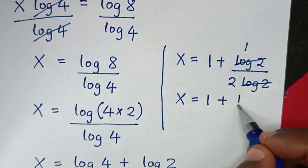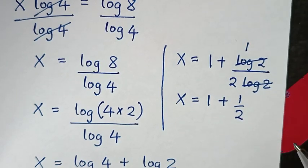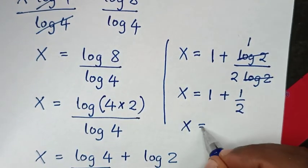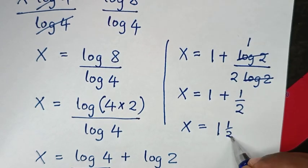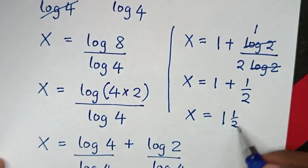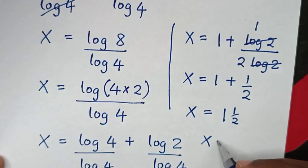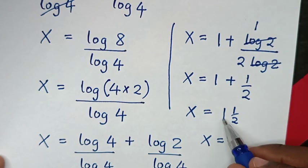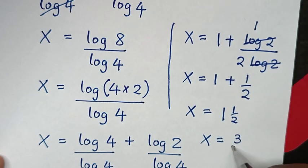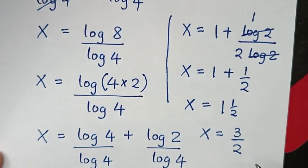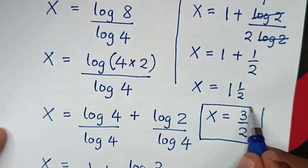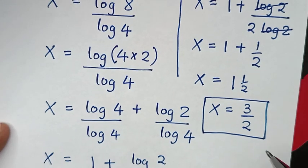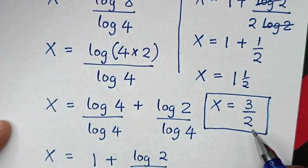So it will be x is equal to 1 plus 1 over 2, which is 1 and a half. Converting to an improper fraction, it will be x is equal to 2 times 1 is 2, then 2 plus 1 is 3 over 2. So this is the final answer: x is equal to 3 over 2.